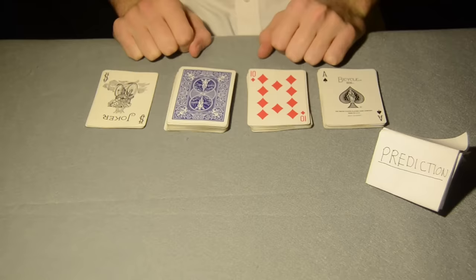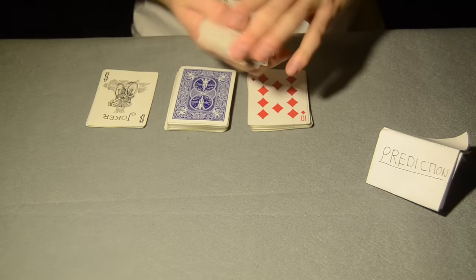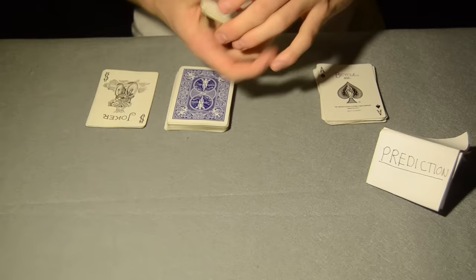The set up for the trick is as follows. Take 9 club cards and the ace of spades and then 15 random red cards. Mix them together and then place a joker on the bottom of the pile.